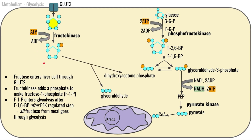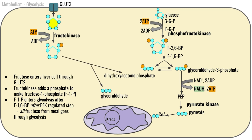We have now trapped fructose into the cell by converting it into fructose-1-phosphate. From there, fructose-1-phosphate can get split apart into dihydroxyacetone phosphate and glyceraldehyde, and from there it can just go through the rest of glycolysis the same way glucose would.